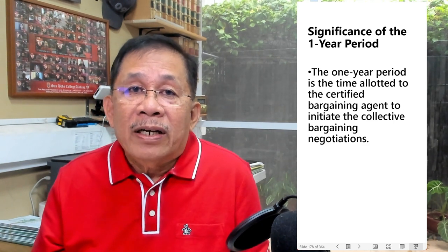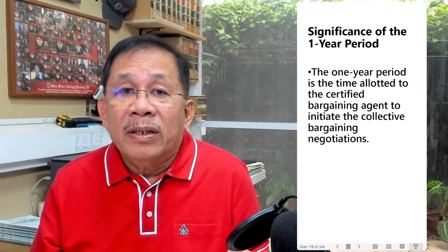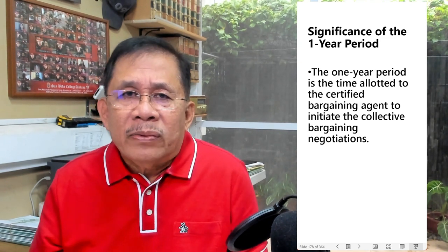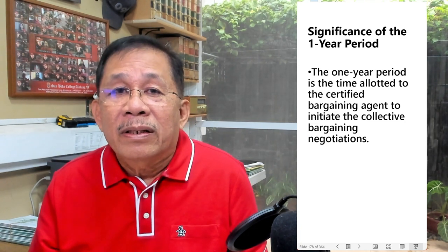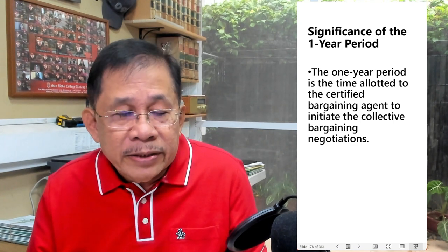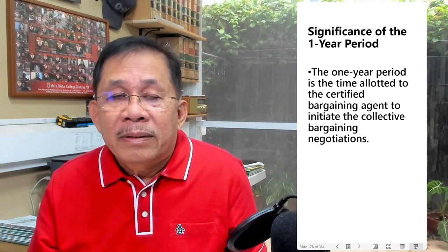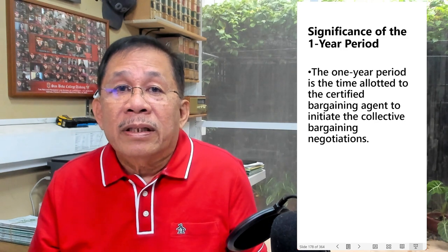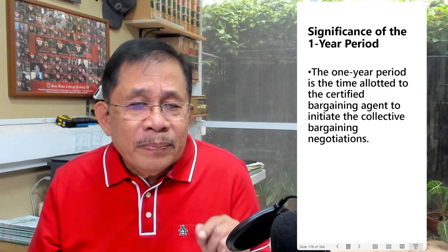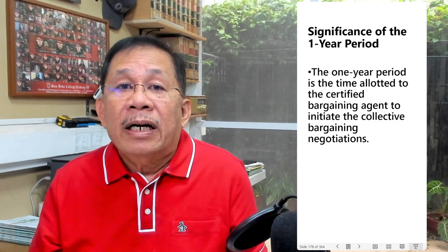This is exemplified by the case of Campil vs. Trahano. Union number one was certified as bargaining agent of all rank-and-file employees. Four years had lapsed without any bargaining negotiations between the company and union number one. Union number two then filed a petition for certification election. The Supreme Court ruled that the petition will prosper because the one-year period during which the certified union is required to initiate the bargaining negotiations has already expired.